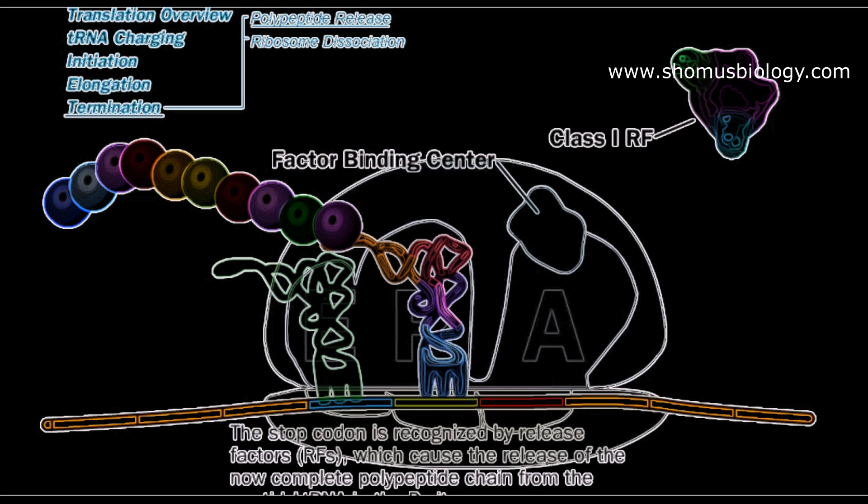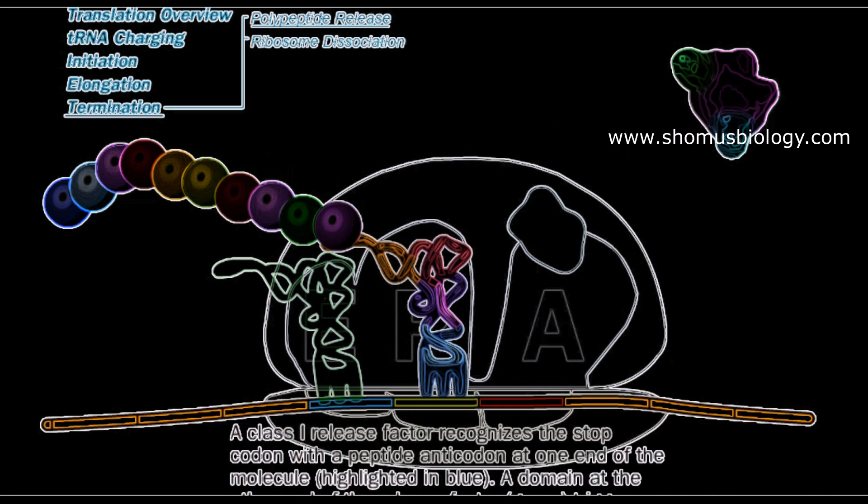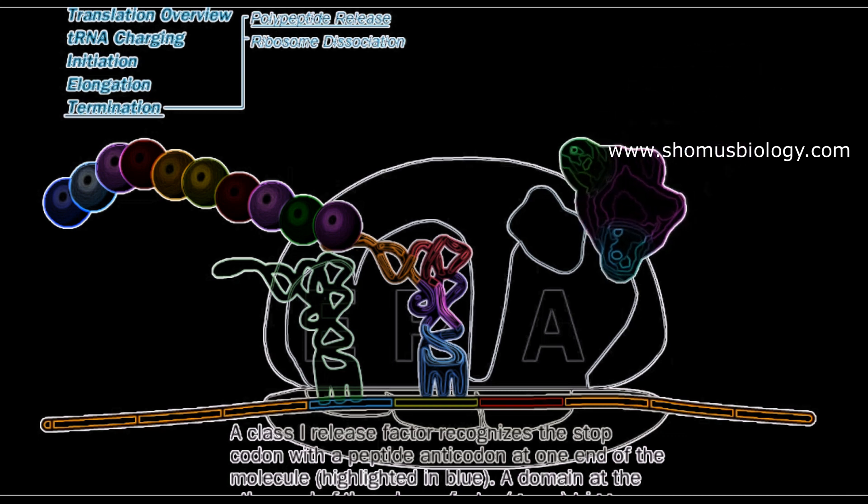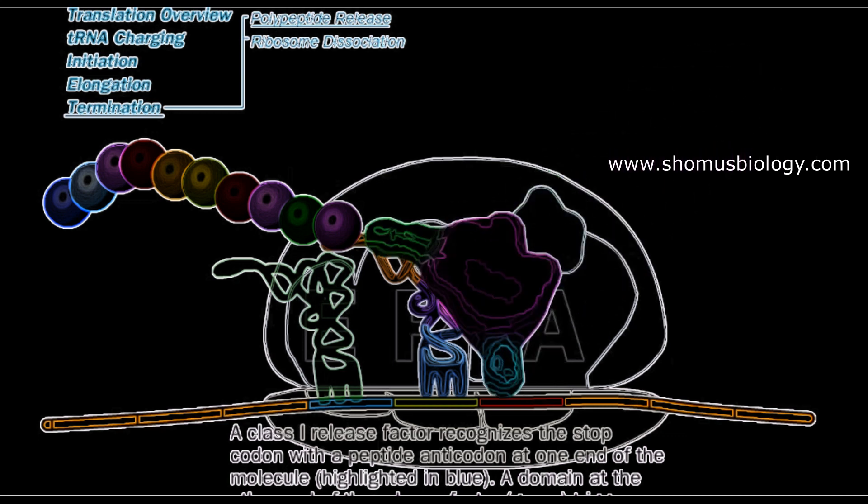Class 1 release factor binds to the factor binding center of the A site. It has an anticodon region that recognizes and binds to the stop codon.